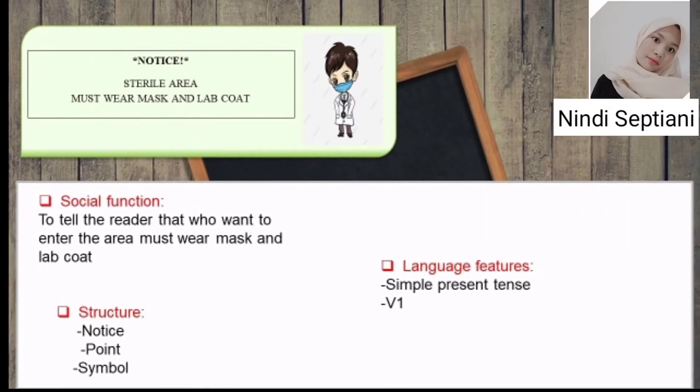The second sign: notice 'Sterile area — must wear masks and lab coats.' The social function is to tell the reader that whoever wants to enter the area must wear masks and a lab coat. The language feature uses simple present tense and verb one. The structure is: notice, point, and symbol.